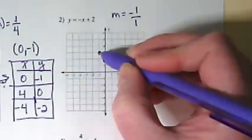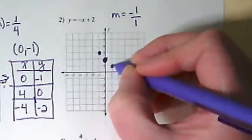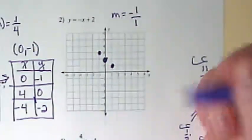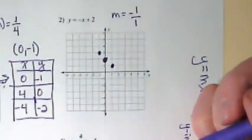So I've gone up 1 and to the left. I can also go down 1 and to the right. And that's going to also give me another point on that line that when I graph through it, it's going to be negative.